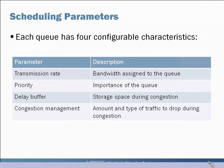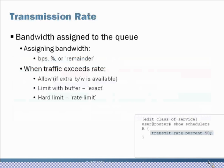In terms of scheduling configuration there are really four parameters in play: transmission rate is the bandwidth assigned to each queue; priority is the relative importance of one queue to another; delay buffers — the amount of storage space when traffic fills up in a queue; and at some point when there's simply too much traffic, you start to drop some inside the device — that's called congestion management.